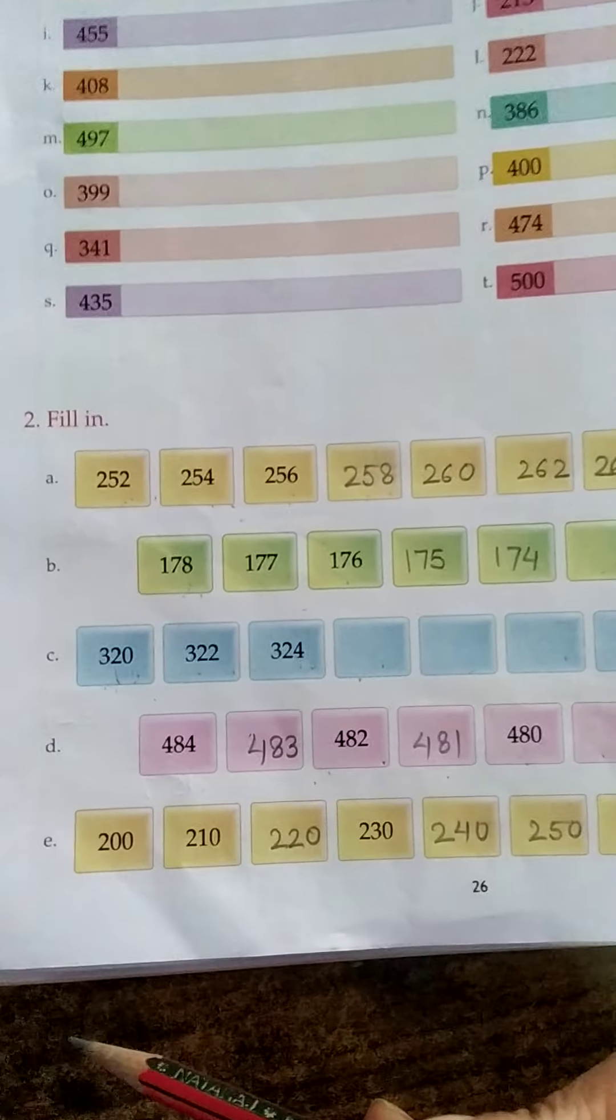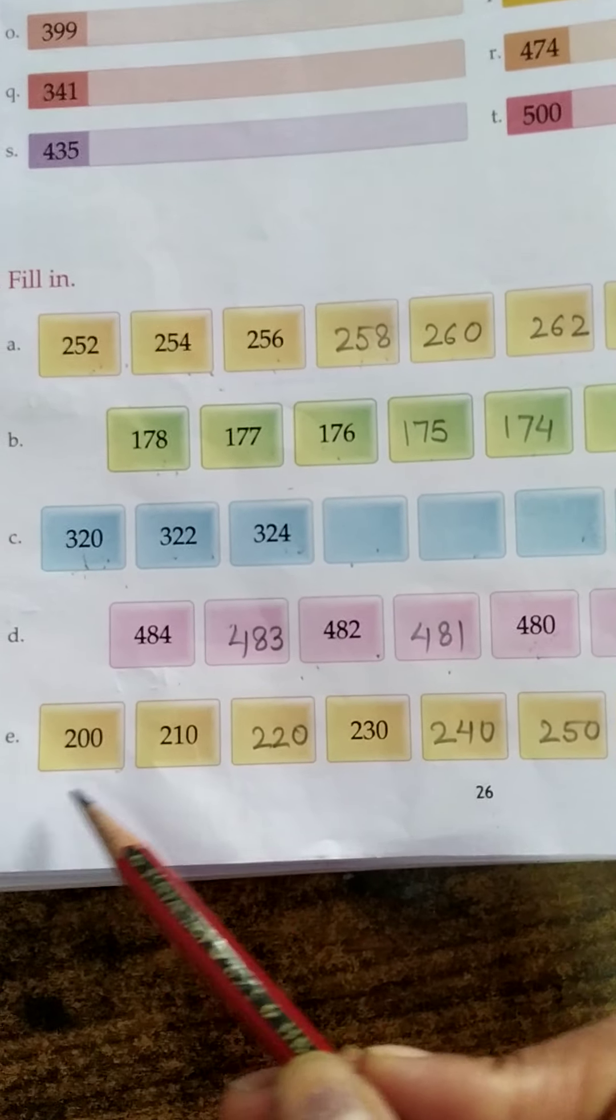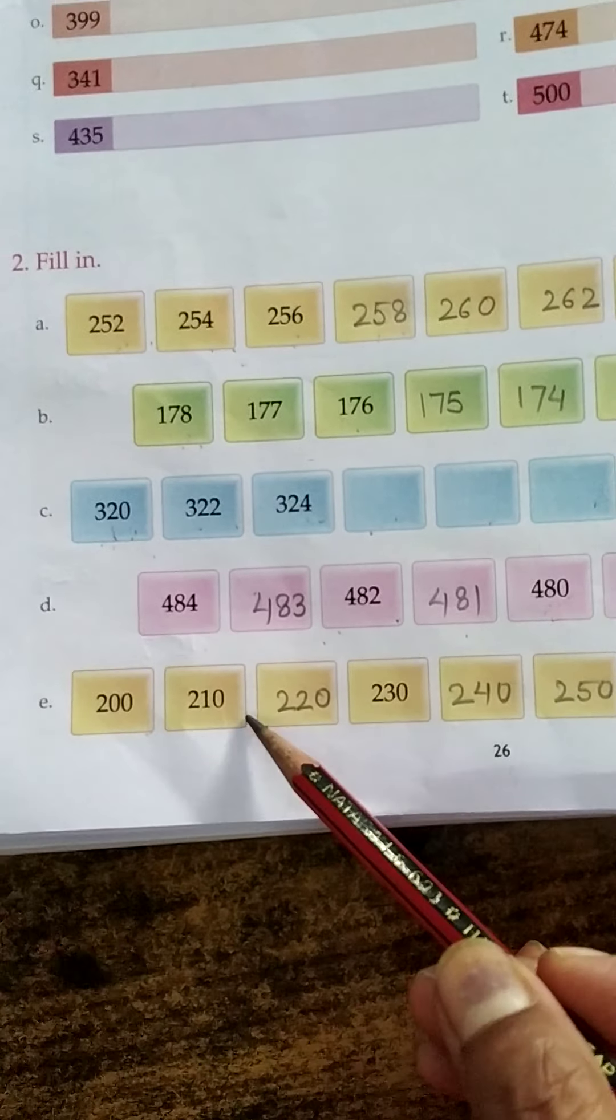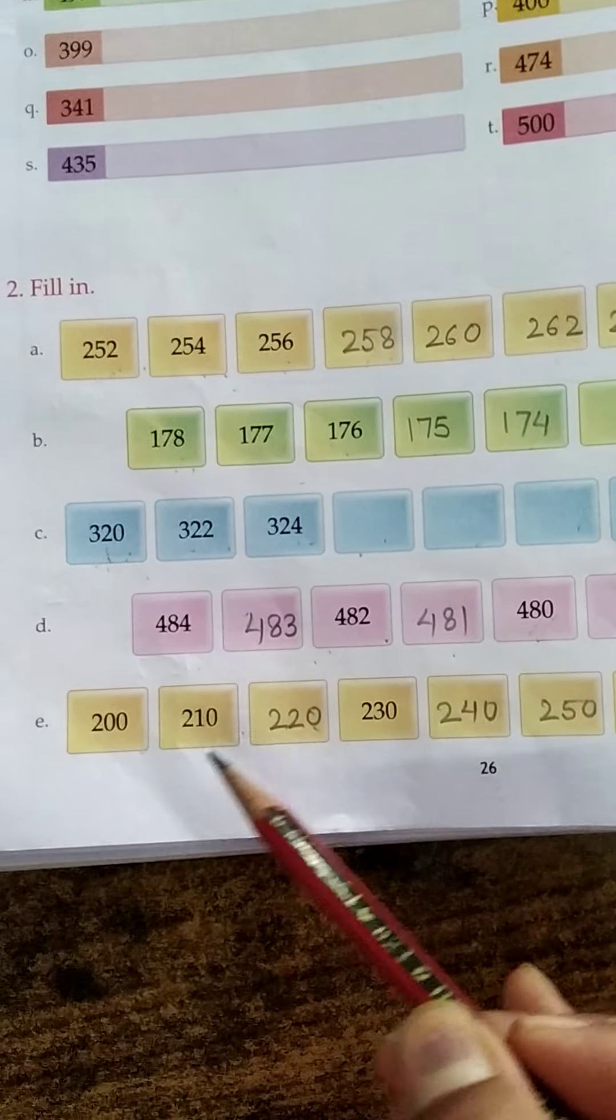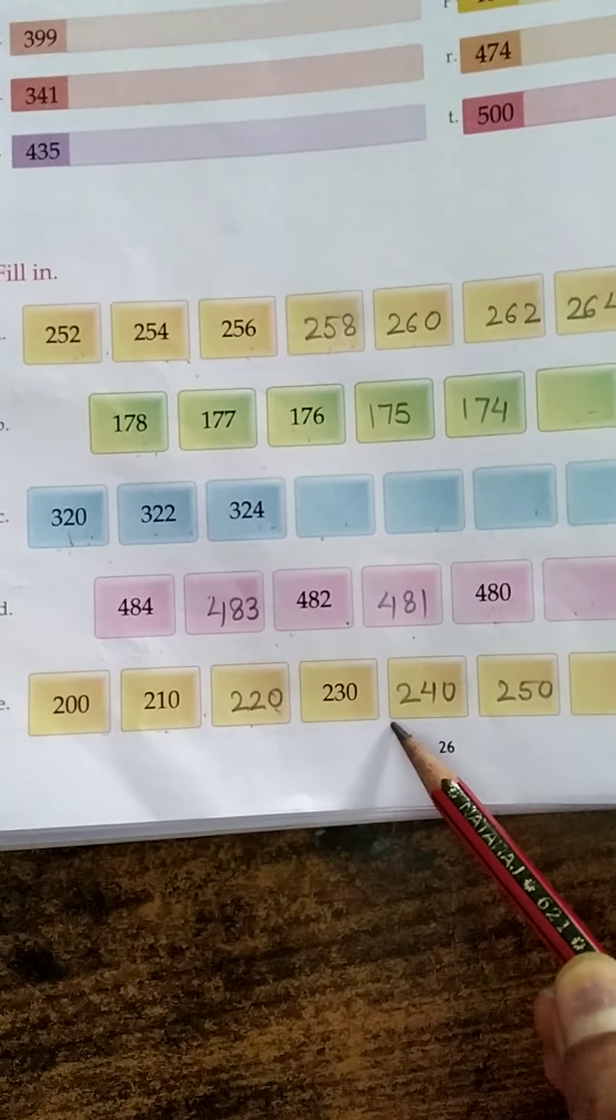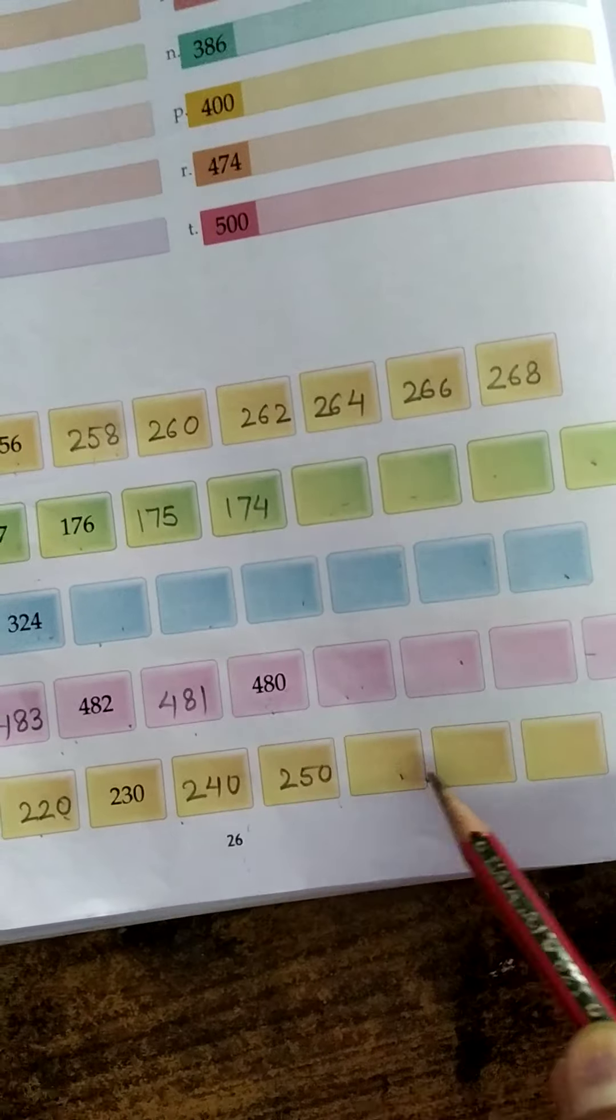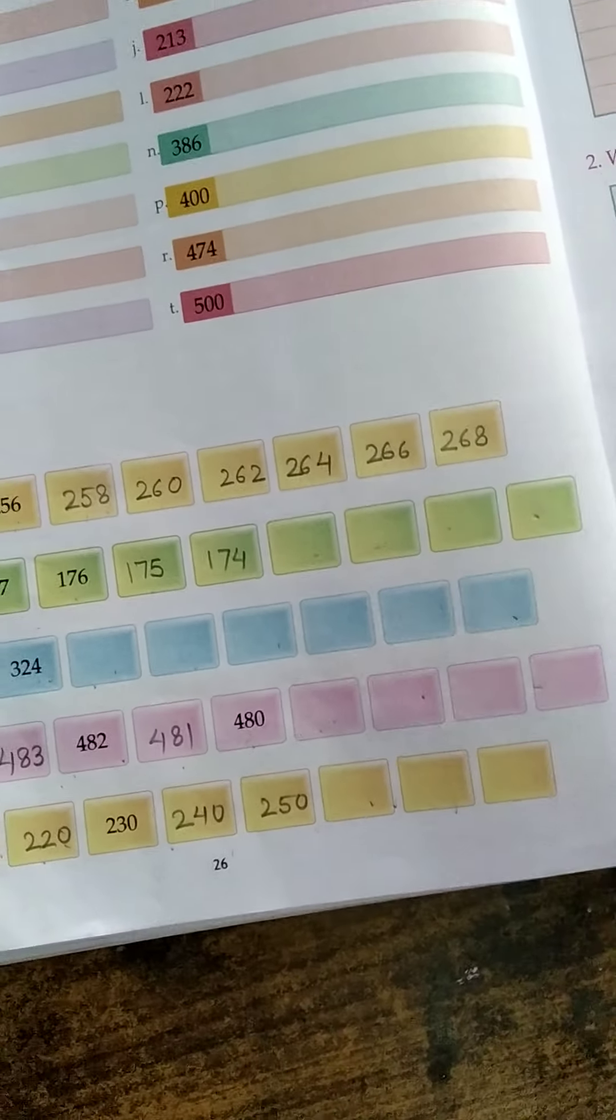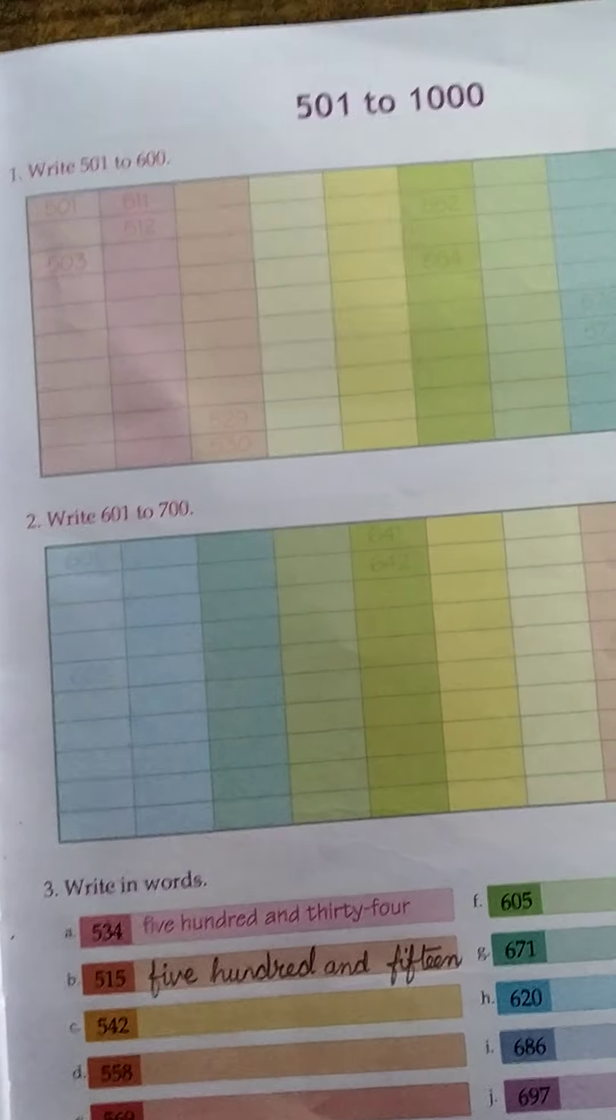Here, this is the series of add on 10 numbers. 200, then 210. What will come? If we add 10 numbers in this, 220, 230, 240, 250, then 260, 270, 280. I hope you all understood the exercise.